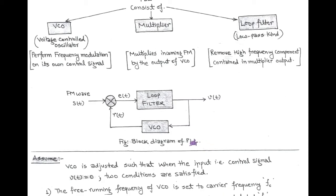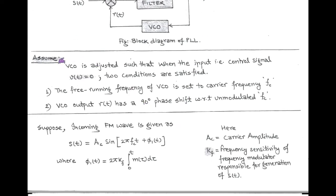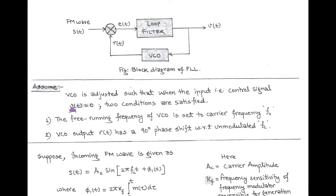Now we discuss PLL briefly with the help of equations. Before this, we assume that the voltage controlled oscillator is adjusted such that when the input VT, called the control signal, is zero, two conditions must be satisfied. First, the free running frequency of the VCO must be set to the carrier frequency. Second, the output of the VCO, RT, has a 90 degree phase shift compared to the unmodulated carrier. In the phase locked loop, the main function of the VCO is the modulation process — it generates its own FM wave using control signal VT, called the locally generated FM.